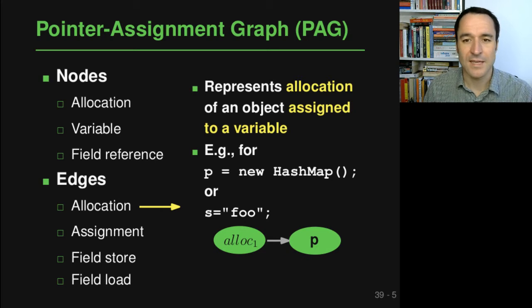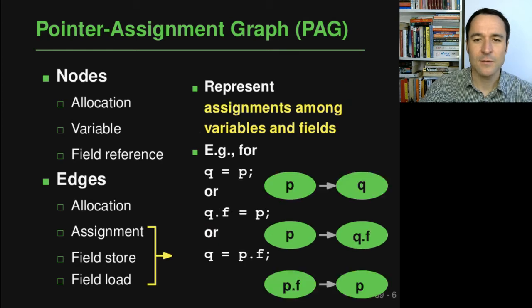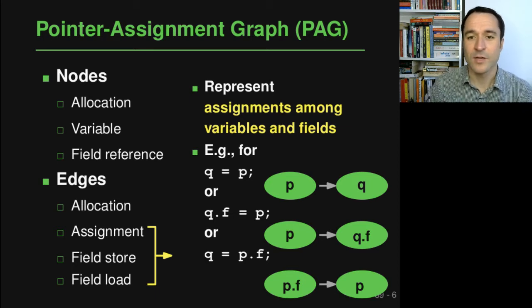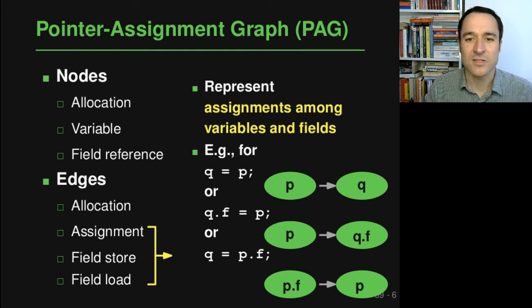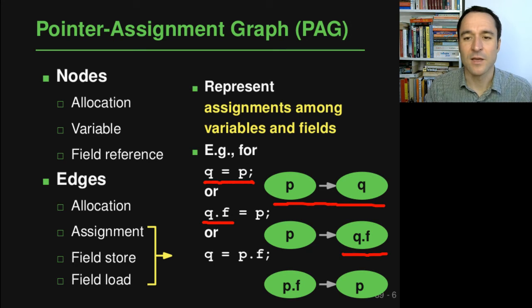The same will happen if we do not explicitly call a constructor but create an object like a string literal, which also creates a string object. Assignment edges are similar in that they also represent data flow from one field or variable to another. Whenever there's an assignment from a variable to a variable, from a field to a variable, from a variable to a field, or from a field to a field, one of these edges is used. If the assignment involves fields, the corresponding nodes may be field reference nodes.